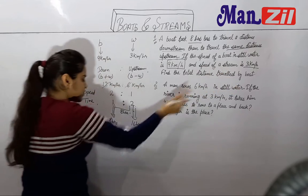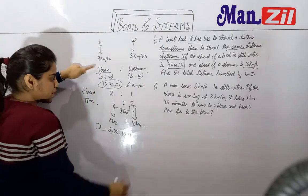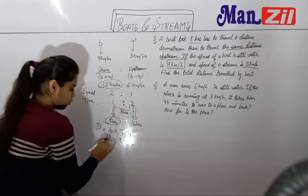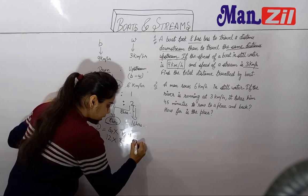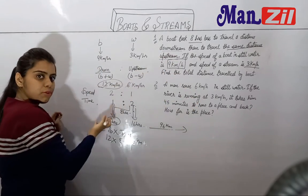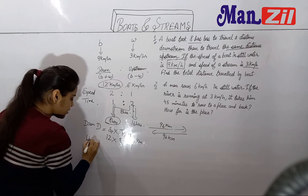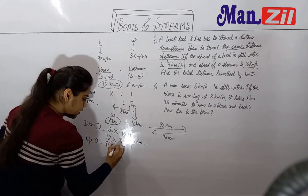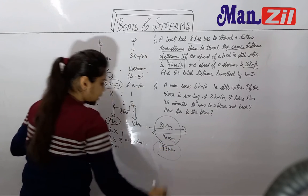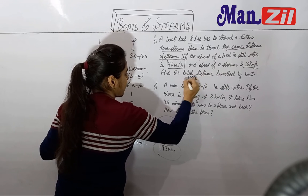After this, we need to find total distance. Distance equals speed into time. We have the downstream speed of 12 km per hour and the downstream time of 8 hours. So 12 into 8 gives us 96 km. That means when going downstream the boat covered 96 km. Since the question states the same distance was covered coming back, the upstream distance is also 96 km. So 96 plus 96 gives a total distance of 192 km.